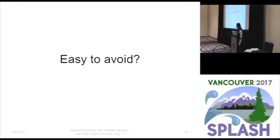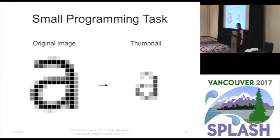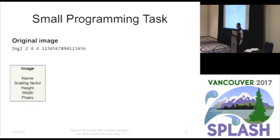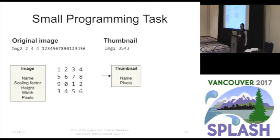To find out, we did a user study. We asked participants at MIT to write a small program that generates thumbnails for images. The input format looks like this: each row has an image which contains a name, a scaling factor, a height, a width, and a list of pixels. In this example, since there are four rows and four columns, the image looks like this.